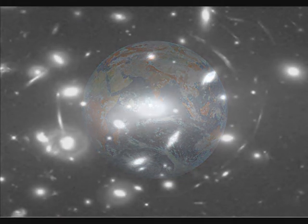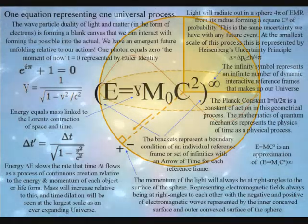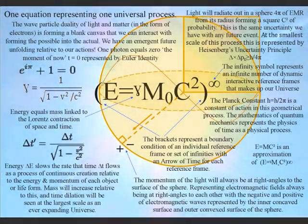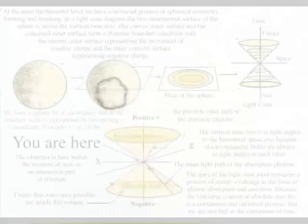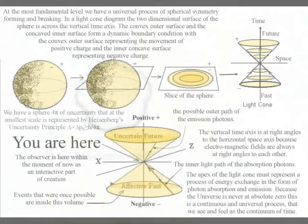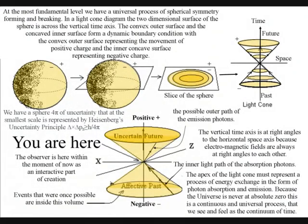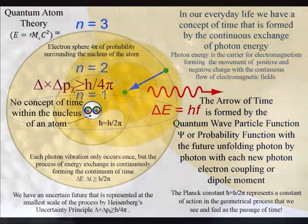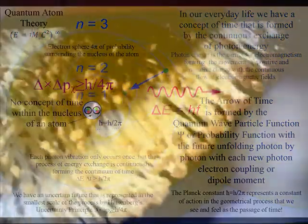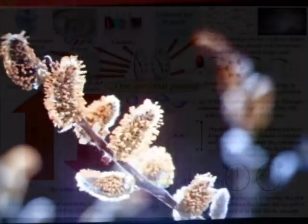These videos explain the universe as a continuum, based on a universal process of spherical symmetry forming and breaking. This process is formed by the exchange of photon energy, with the spontaneous absorption and emission of light, forming the ever-changing world of our everyday life. Such a process will form entropy or disorganization, with a built-in potential for ever greater symmetry formation.